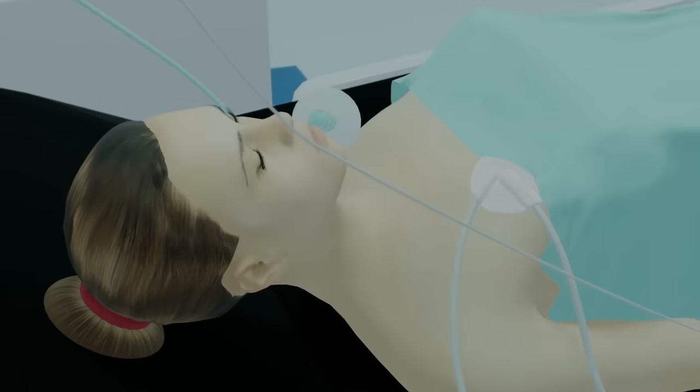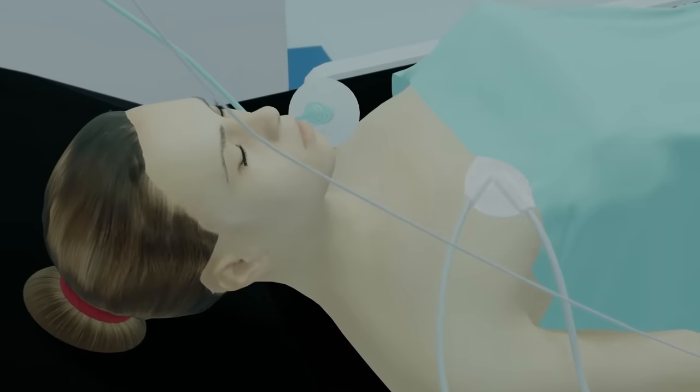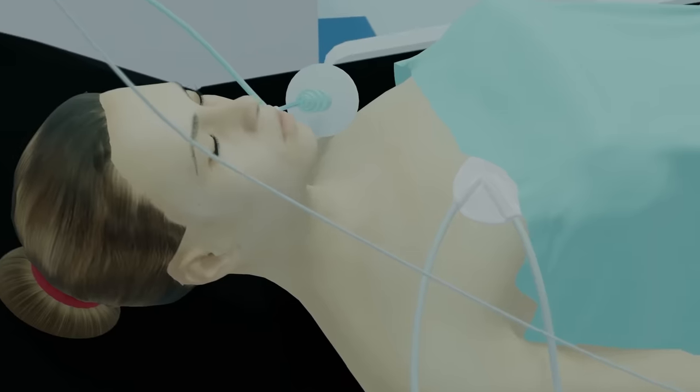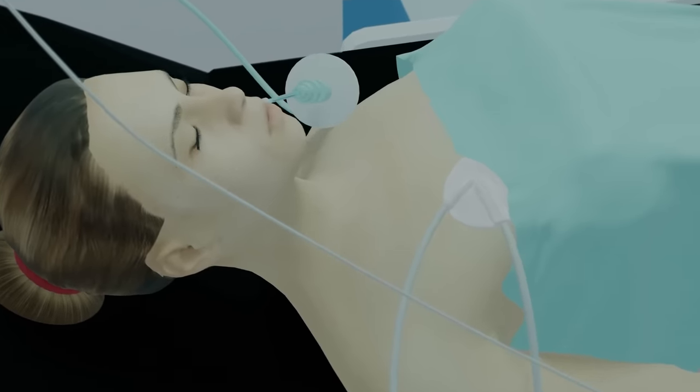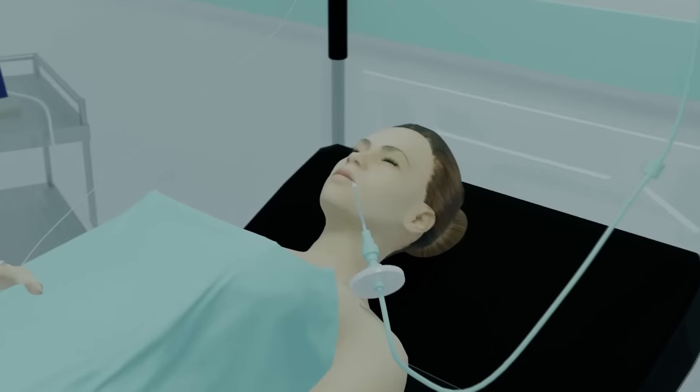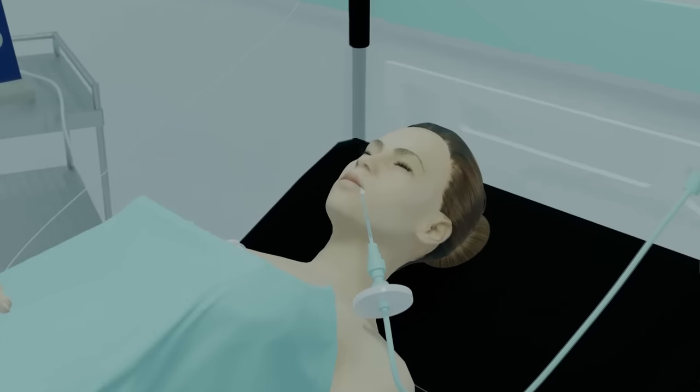The chest tube will remain in place to drain excess blood and air from the chest cavity. Once the patient is able to breathe on their own, the breathing tube will be removed and replaced with an oxygen mask.